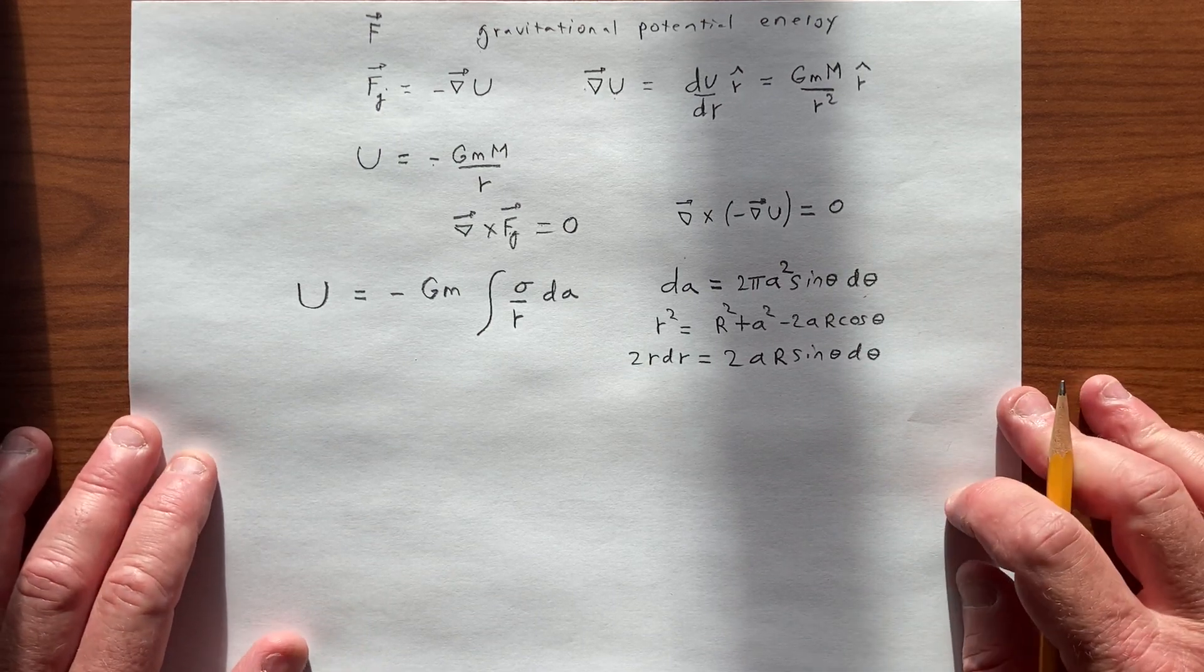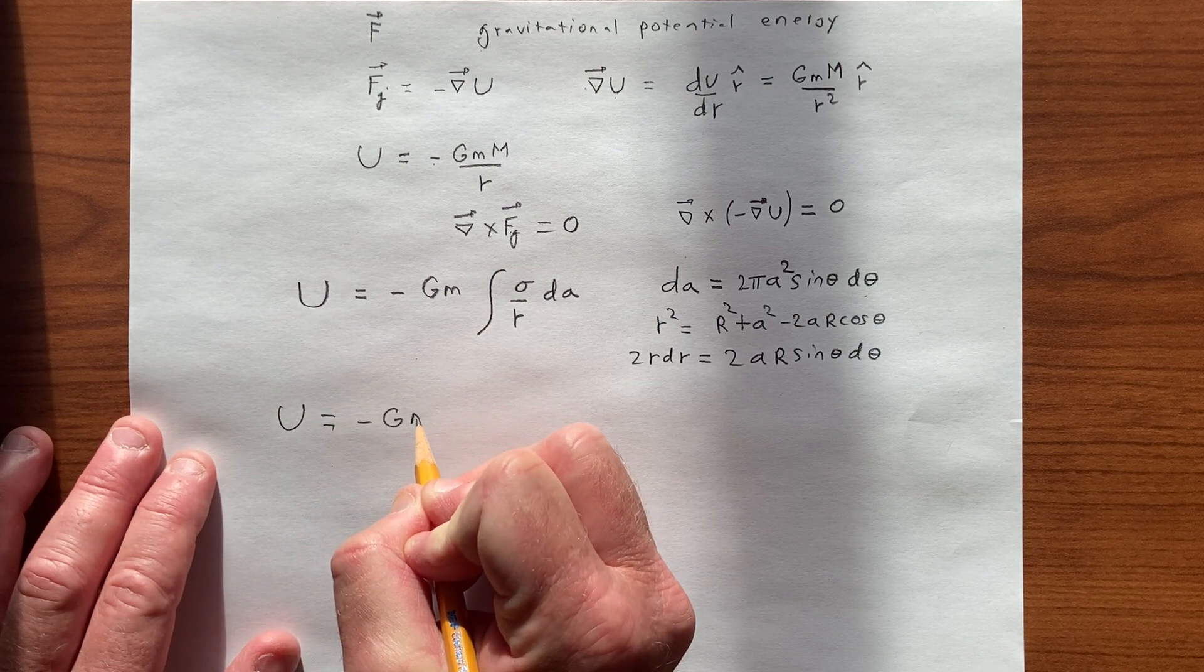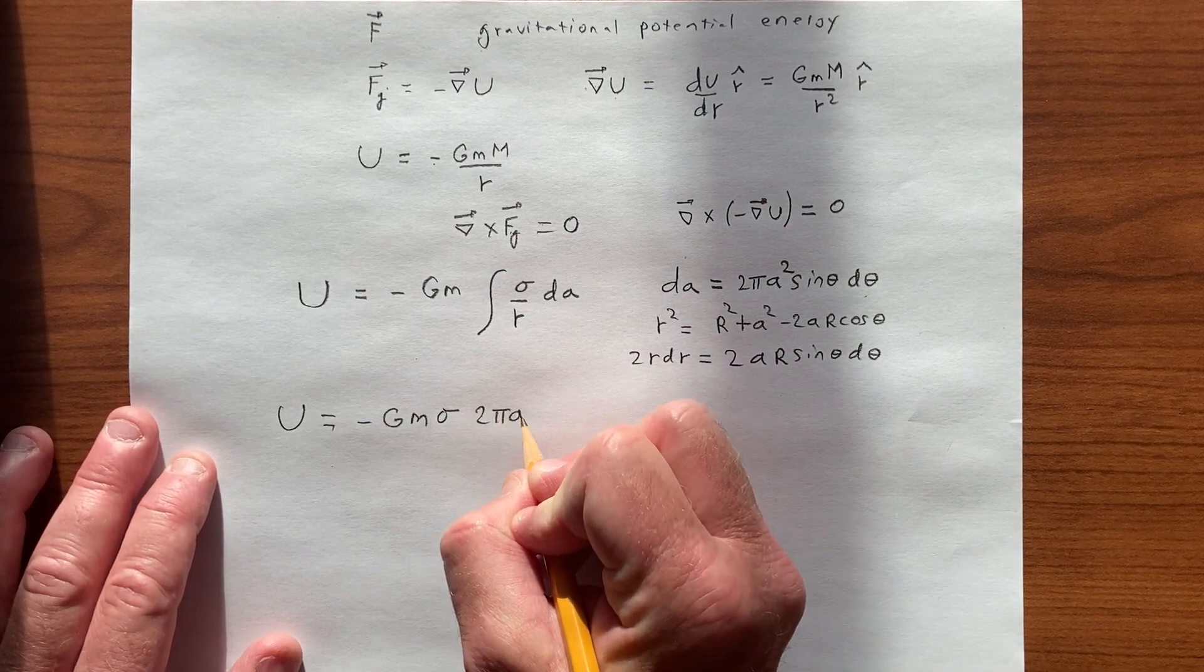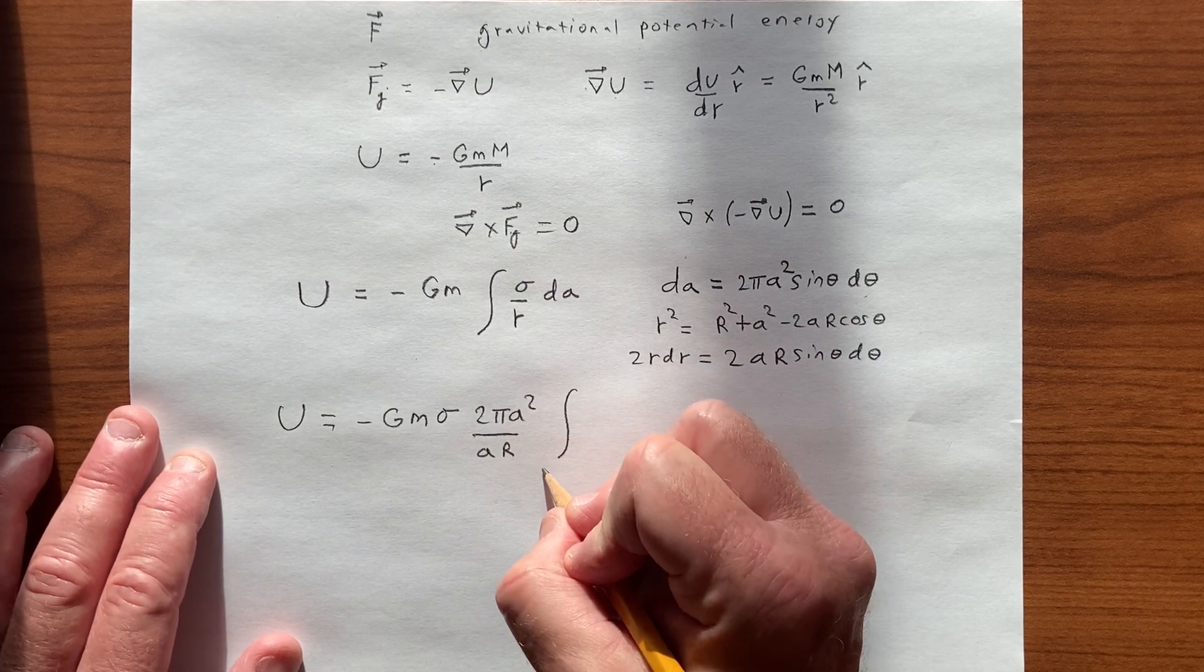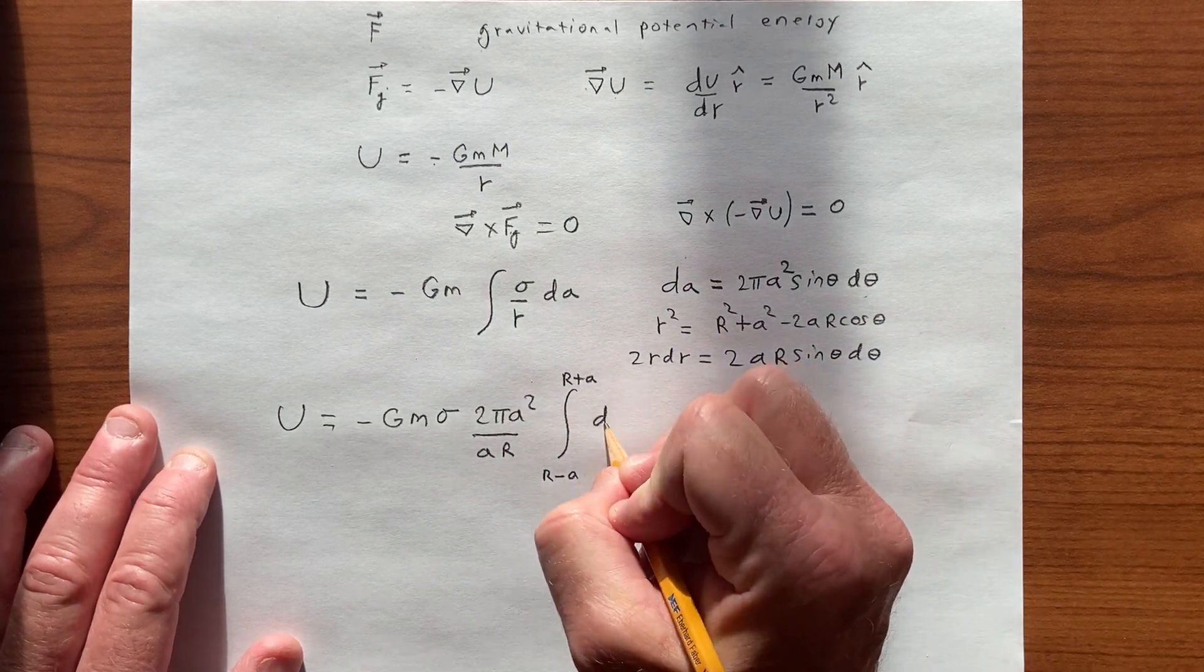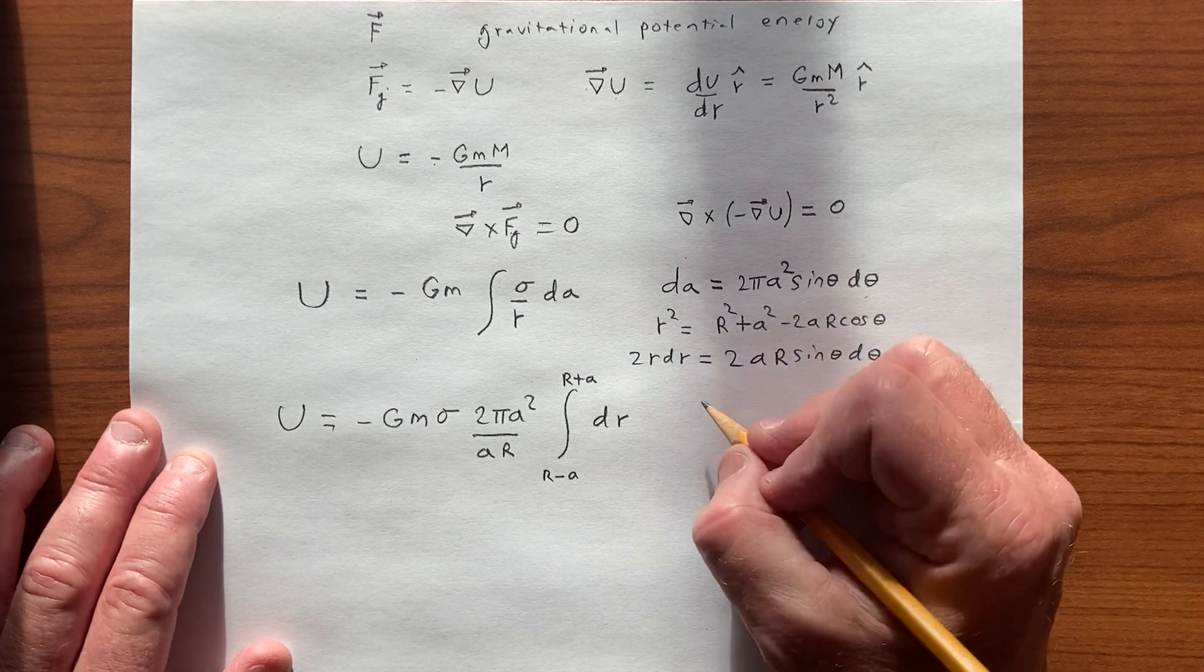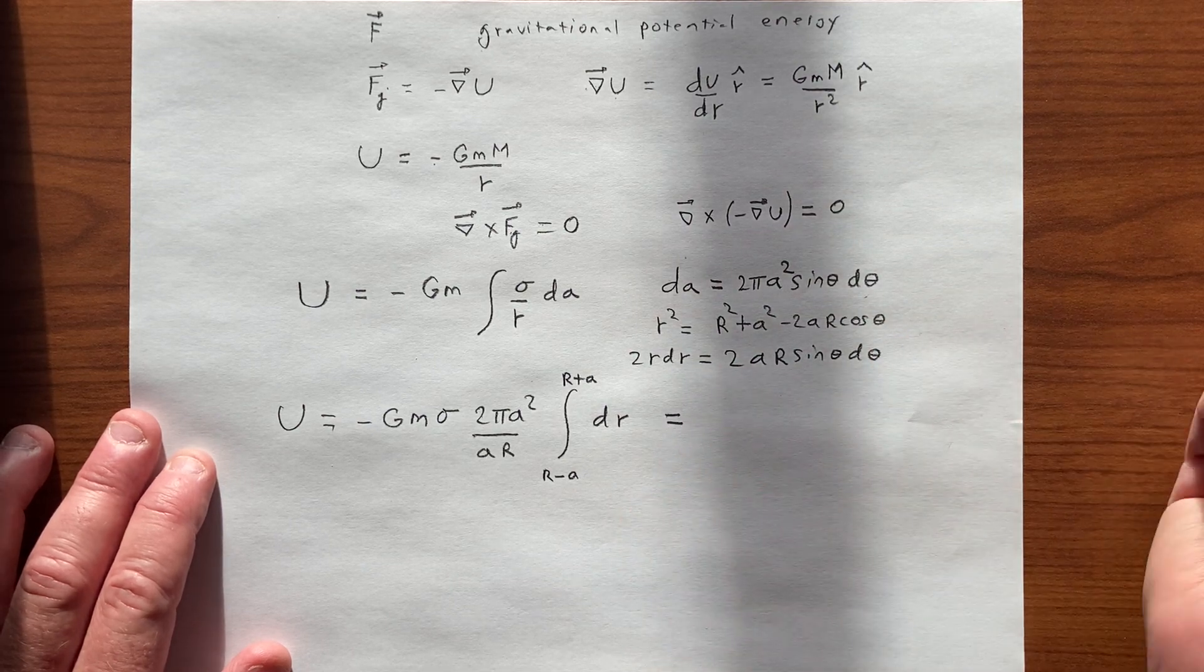And so in this case, what we have to do is integrate to get U minus Gm, little m, sigma is just a constant. We end up with 2 pi A squared over A r. We know that we're going from r minus A to R plus A as we saw in the previous video, and we are integrating in the r. And so we know that we're, let's see, and so this becomes completely straightforward.